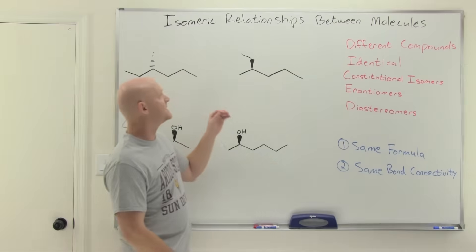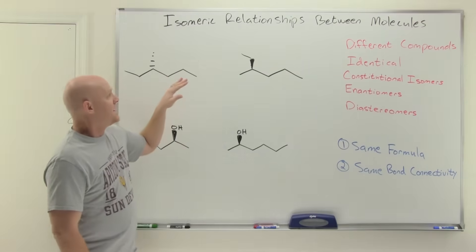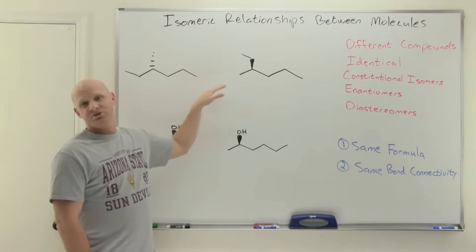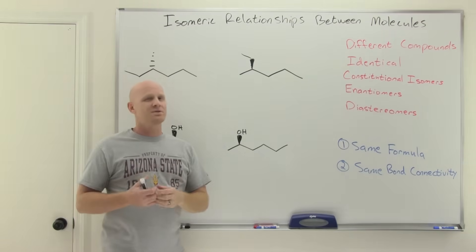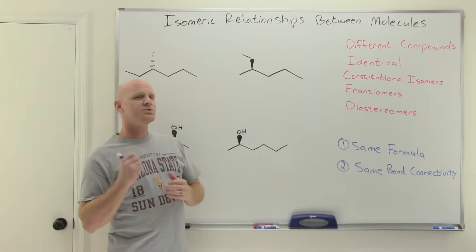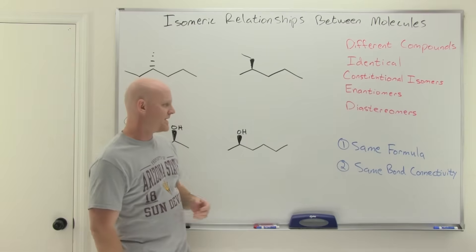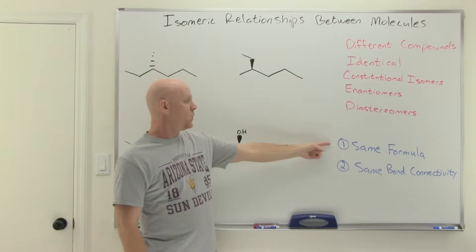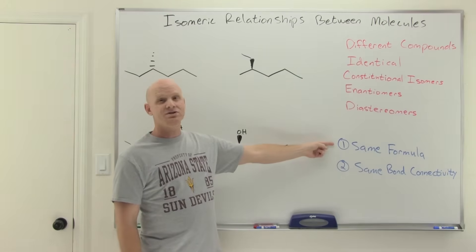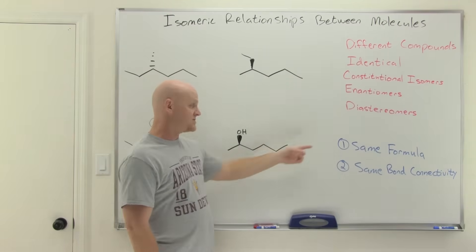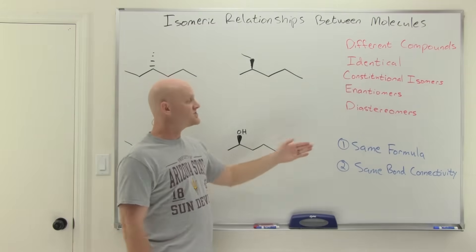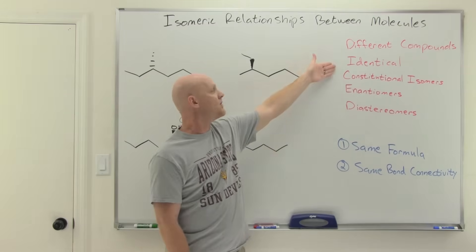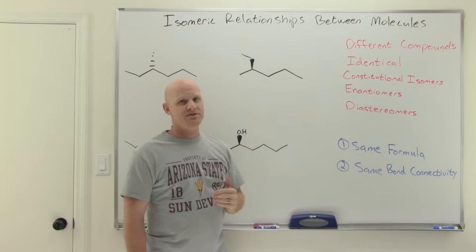Let's dive right in. When looking at a couple of structures and trying to figure out the relationship, there are two questions to start with. First: do your structures even have the same formula? Because if they don't, they're just different compounds. If they do, then all the rest of the options are on the table.